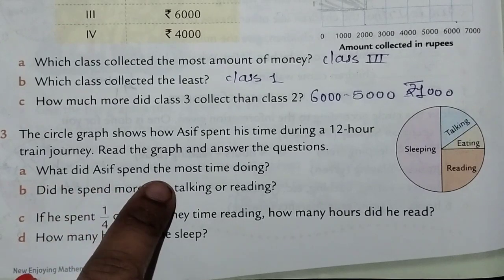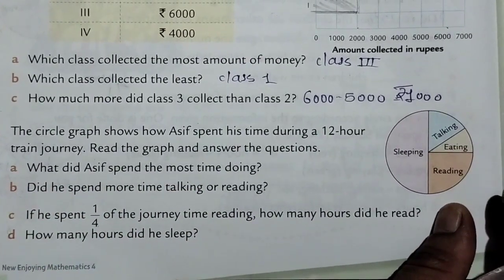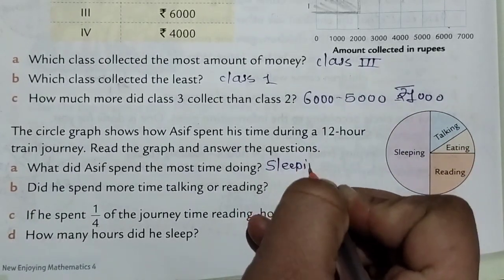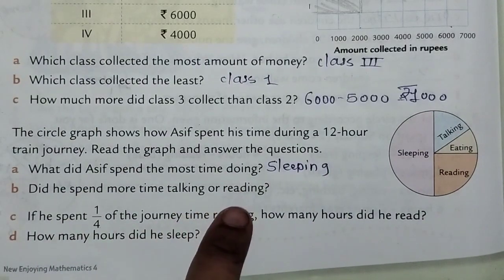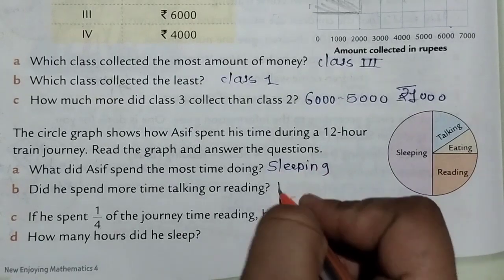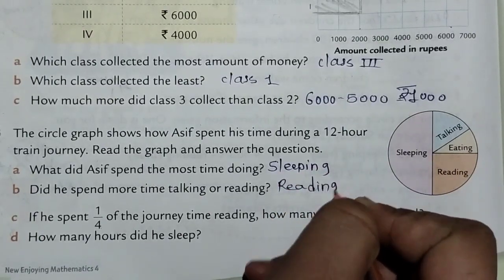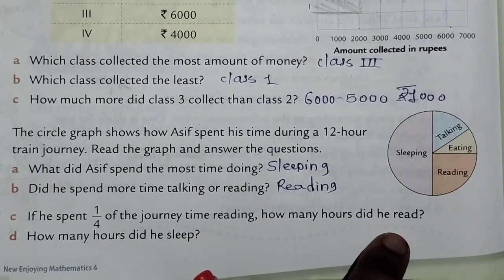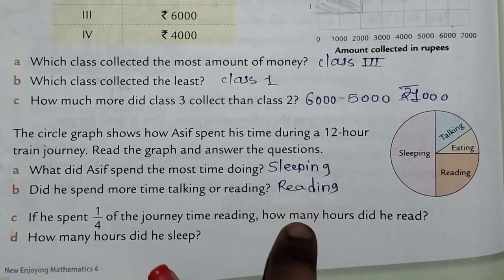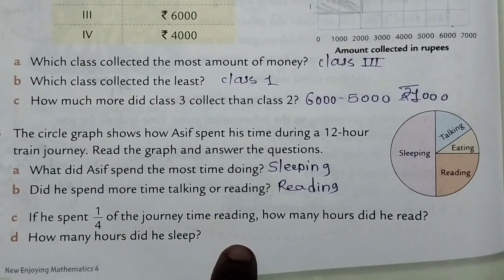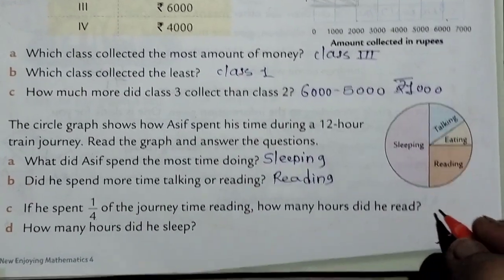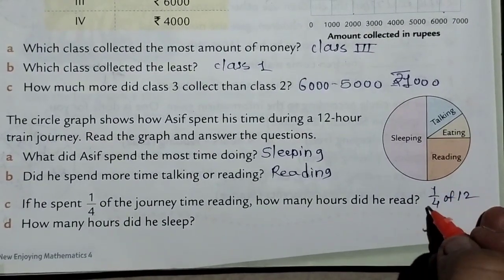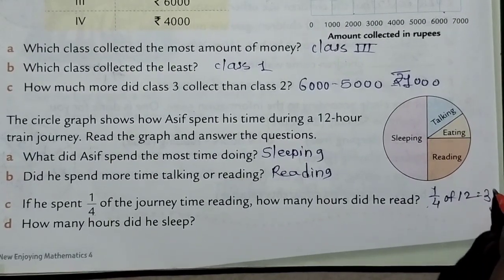Question A: What did Aship spend the most time doing? The answer is sleeping, so we write sleeping here. Question B: Did he spend more time talking or reading? He spent more time talking. Question C: If he spent one-fourth of the journey time reading, how many hours did he read? 12 divided by 4 equals 3 hours, so he read for 3 hours.